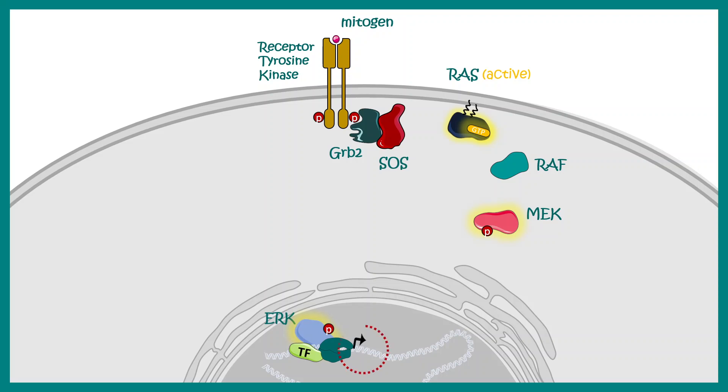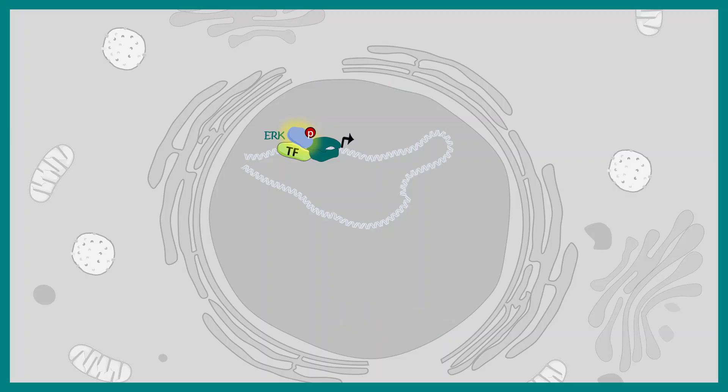Now let's talk about what genes are transcribed by this pathway. The genes transcribed by the RAS MAP kinase pathway are responsible for growth and cell division, such as cyclin D1. Also, genes responsible for survival and proliferation — such as c-MYC, BCL2, and BCLXL — are all target genes of the RAS MAP kinase pathway.